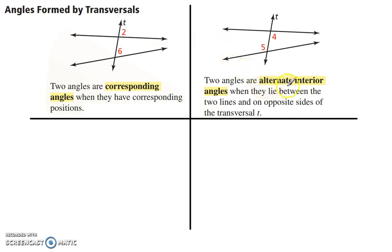Alternate interior. Interior means on the inside of those two lines. Alternate means on opposite sides. So they lie in between. So they are on the interior and they are on opposite sides of the transversal.